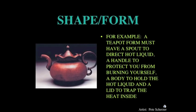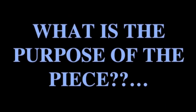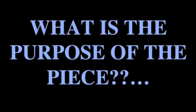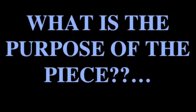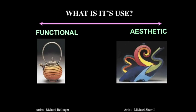For example, a teapot form must have a spout to direct hot liquid, a handle to protect you from burning yourself, and a body to hold the hot liquid and a lid to trap the heat inside. We need to determine what's the purpose of the piece, and that tells us a lot about what the form is going to be. Its use determines to a great extent what the shape or form is going to be.